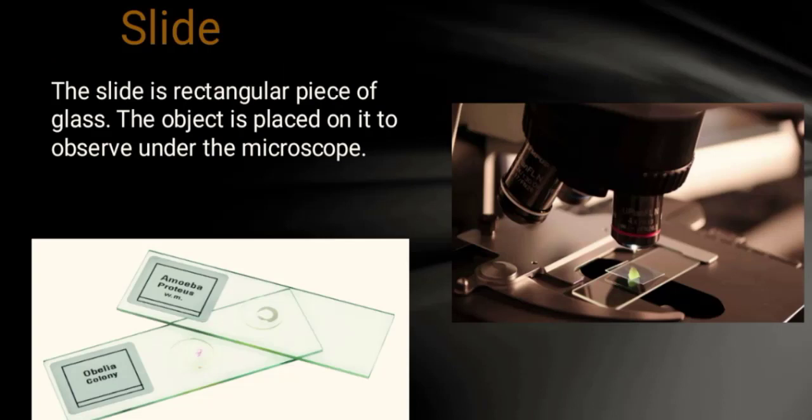The slide is a rectangular piece of glass on which the object is placed. It is then observed under the microscope, where we can see the object and its image.